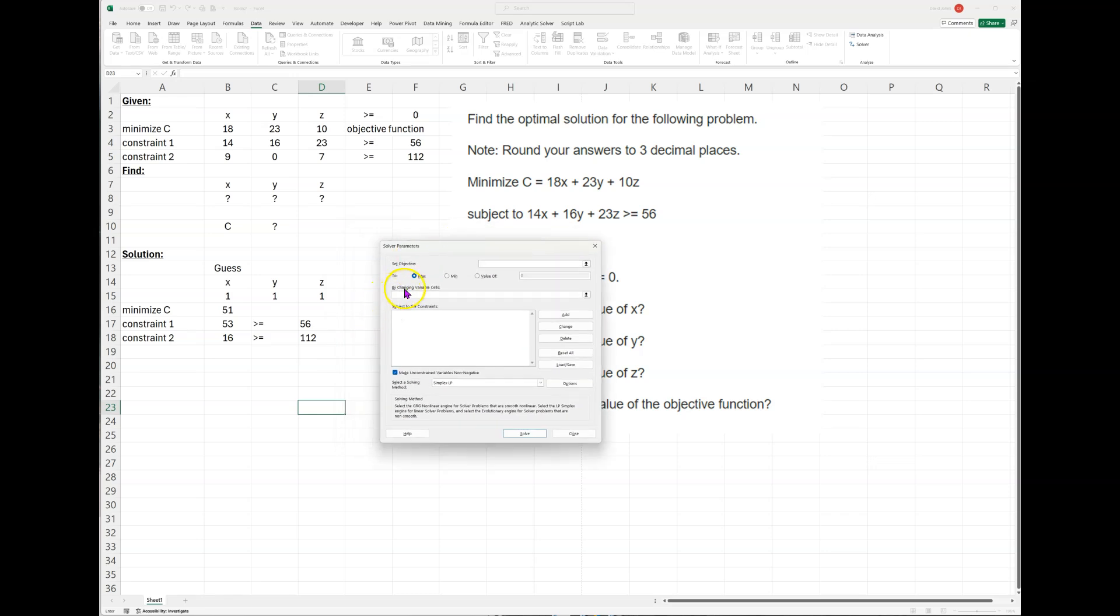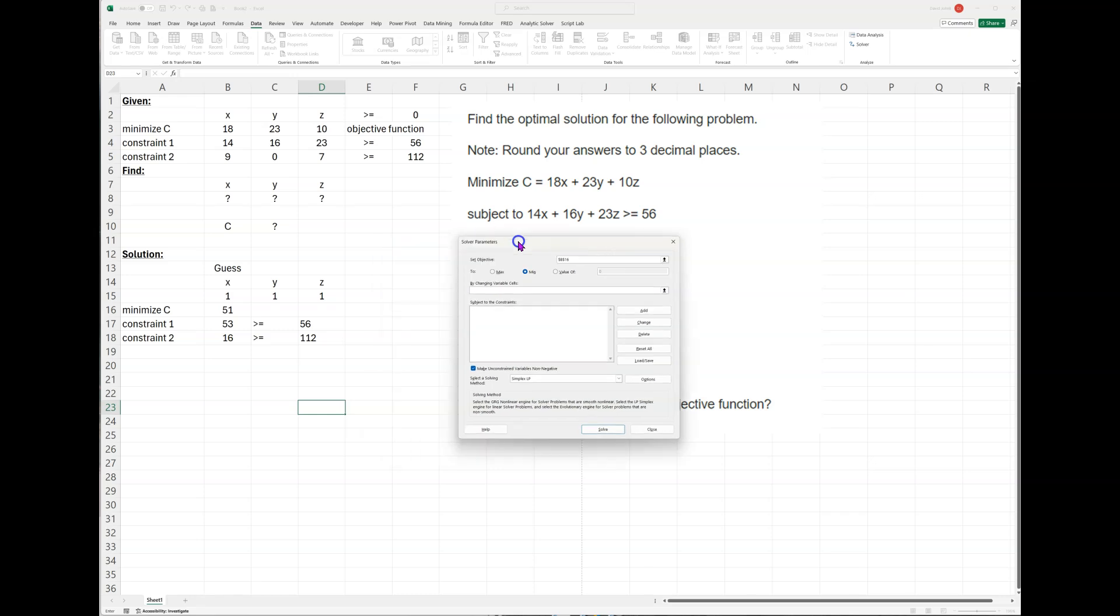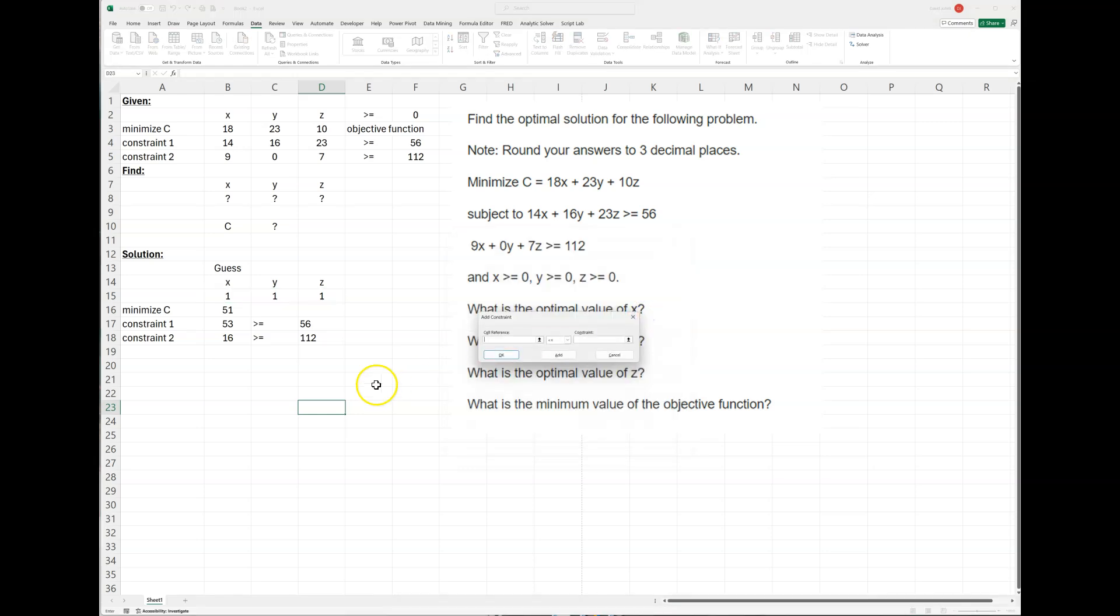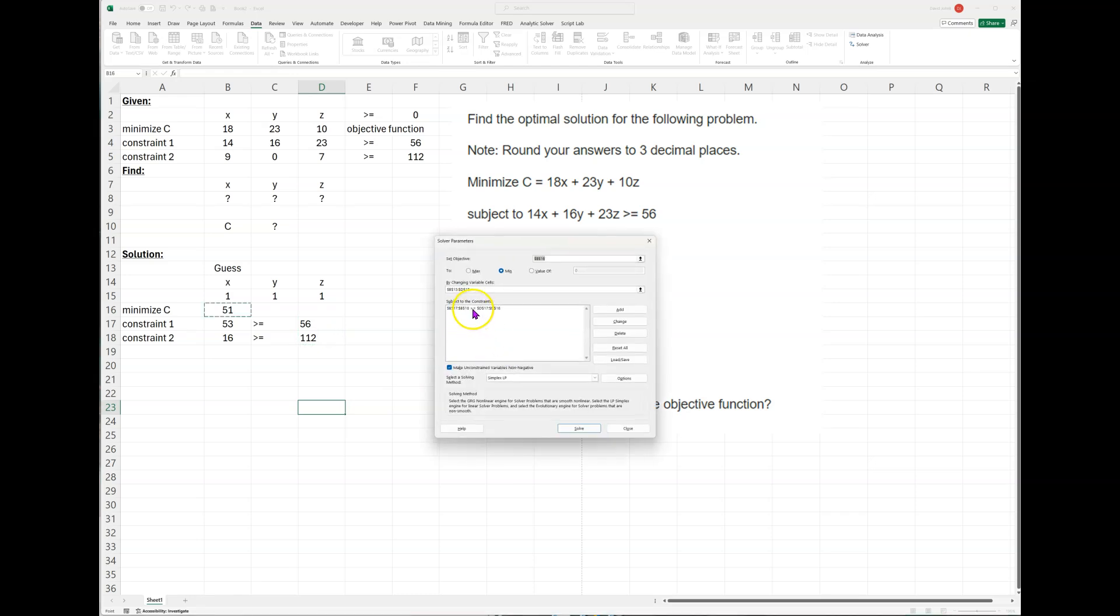So first thing we want to do is this is my constraint that I calculated right here. So I'm going to click on that and I want to minimize that. And how do I want to minimize that? By guessing different numbers in here. This is like a combination lock. We're guessing these to minimize that. And at the same time, now we have to add these constraints. So I'm going to go add. Since these are both the same direction, I can do them both at once. I can highlight these two and change this to greater than or equal to these two. And I can go okay.